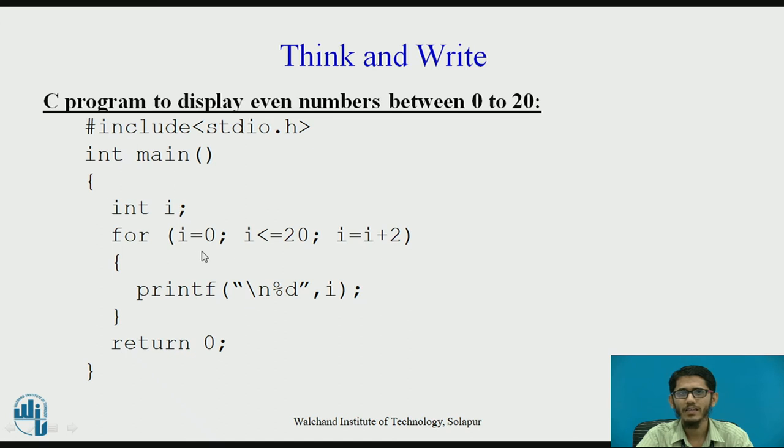What will happen when the value of i is equal to 0? The condition is checked, 0 is less than equal to 20, it is true. Then this line is printed, percentage d value of i, that means 0 is printed. After that, in iteration part, i value is incremented to 2, then condition is checked and value of 2 is displayed. This part goes on continuing and it terminates when this condition fails.